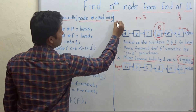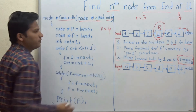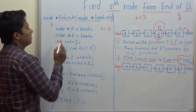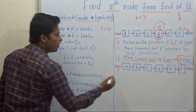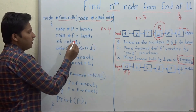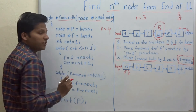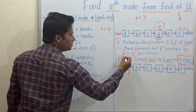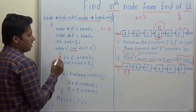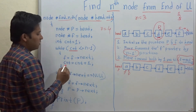Suppose n is equal to 4 in this case and we will execute this code on this linked list. Node* p and f are pointing to head. Then we initialize a counter cnt equal to 1. While cnt is less than or equal to n minus 1, we move forward: f = f->next and increment the counter.